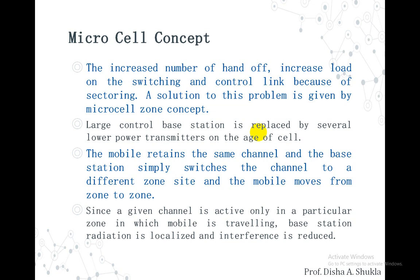The large central base station is replaced by several low power transmitters on the edge of the cell. The mobile retains the same channel and the base station simply switches the channel to a different zone site as the mobile moves from zone to zone.